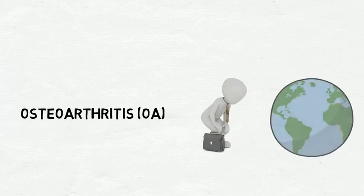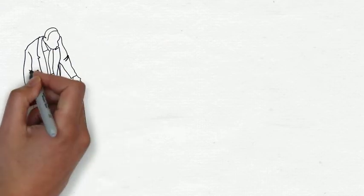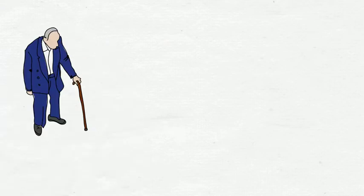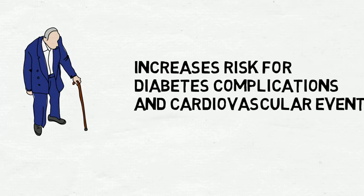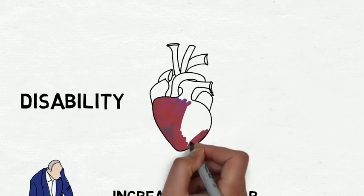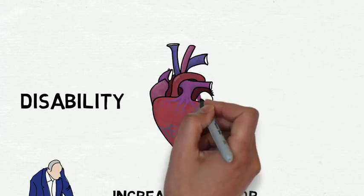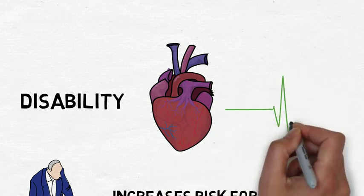It's the most common form of arthritis and is one of the leading causes of disability worldwide. Greater osteoarthritis-related difficulty walking increases the risk for diabetes complications and cardiovascular events. Greater osteoarthritis-related disability is associated with increased all-cause mortality and risk for serious cardiovascular events.